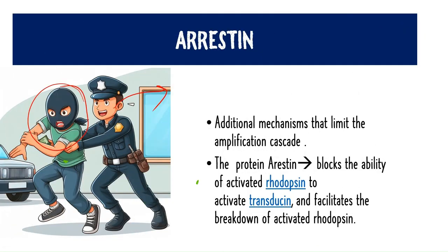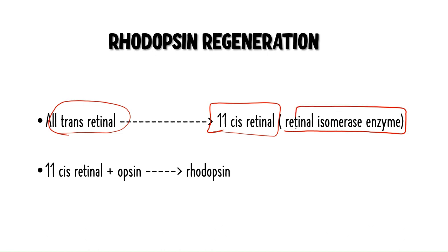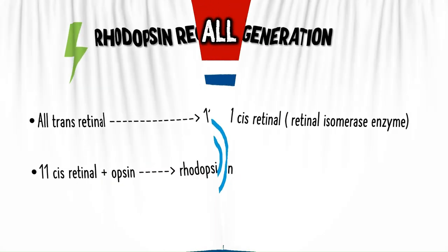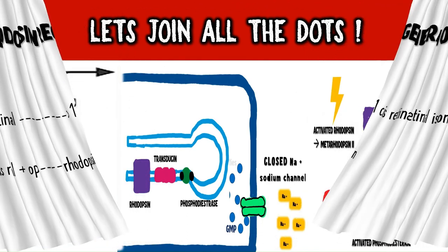After phototransduction stops, rhodopsin undergoes regeneration: all-trans retinal is converted back to 11-cis retinal by the enzyme retinal isomerase. The 11-cis retinal then rejoins with opsin to form rhodopsin again. This regeneration occurs in the retinal pigment epithelium.